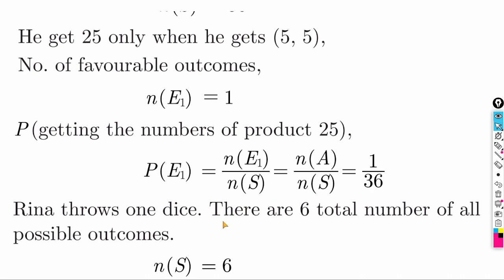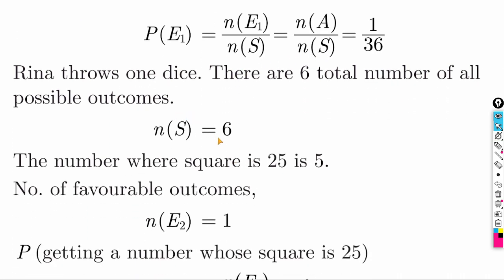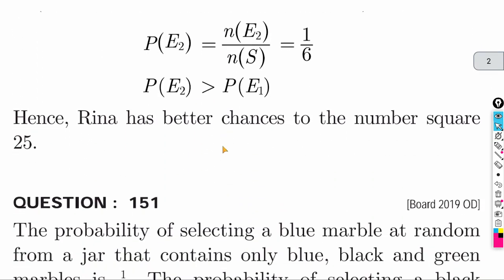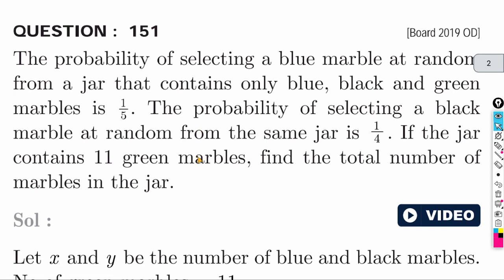For one die, the numbers are 1, 2, 3, 4, 5, 6. Their squares are 1, 4, 9, 16, 25, 36. Only one number (5) has a square equal to 25. So Rina's probability is also 1 by 6. Comparing, Rina has the better chance.